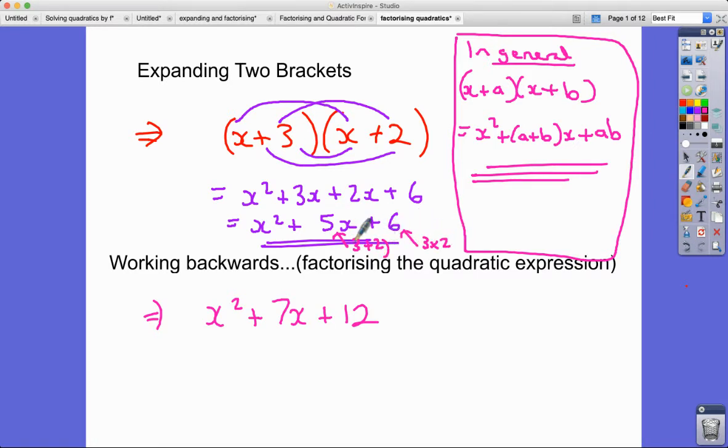So really when it comes to going the other way and working backwards, this is where I'm factorizing the quadratic expression to put the brackets back in. So we're going the opposite way now, going from the expression back to the bracketed form—the factorized form. What I'm looking to find are two numbers to go in these brackets that add up to 7 and multiply to give 12. So put the x's in as usual. What two numbers do I know that add up to 7...